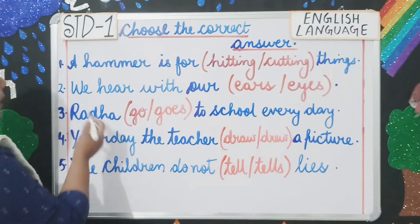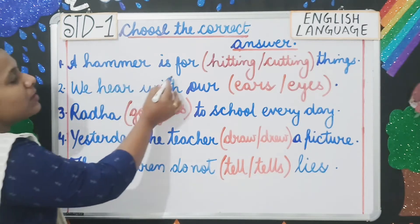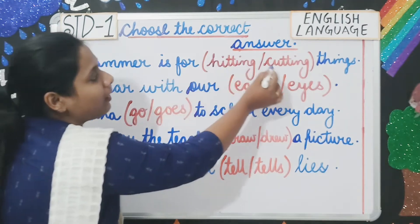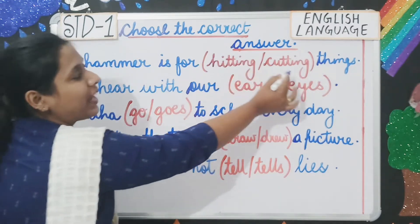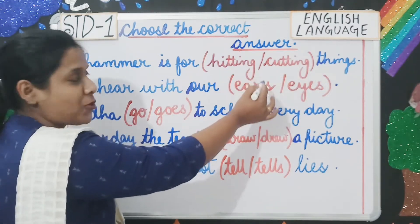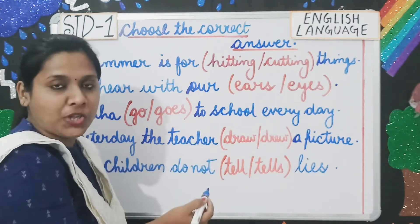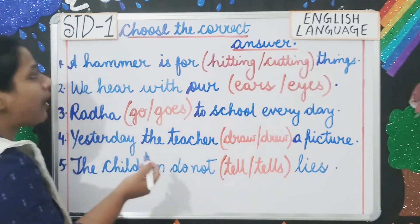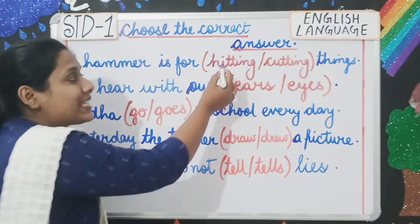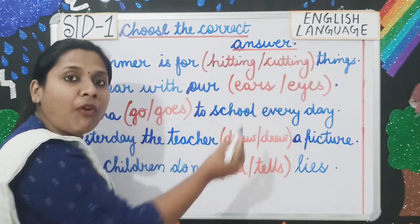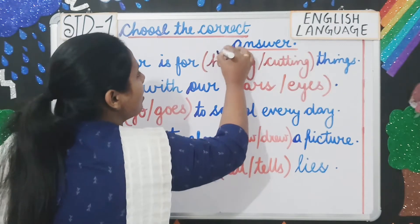Number one: 'A hammer is for hitting / cutting things.' You have to choose the correct option and tick it. A hammer is used for hitting things, so you tick 'hitting.' Number two: 'We hear with our ears / eyes.' You hear with your ears, so you tick 'ears.'